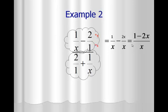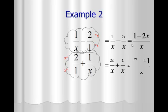On the bottom cloud, the common denominator is also x. The first fraction multiplies by x, changing that top to 2x. The second fraction already has the common denominator and stays 1 on top. Adding these together gives 2x plus 1 over x as the answer to the bottom cloud.